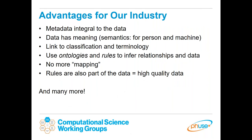Some advantages of linked data for our industry include the fact that metadata becomes integral to the data itself — not in a separate metadata repository or spreadsheet, but part of the instance data. The data has meaning to both machine and people. It's easy to link to classifications and terminology like STTM terminology, which has been available as RDF. We can use ontologies and rules to infer relationships and new information from existing data. There's no more mapping of data — everything just becomes linked together — and having rules as part of the data means we can create very high quality data for submissions.